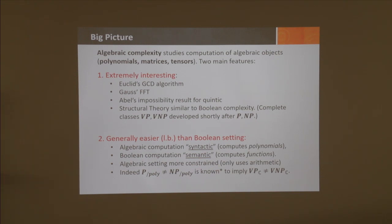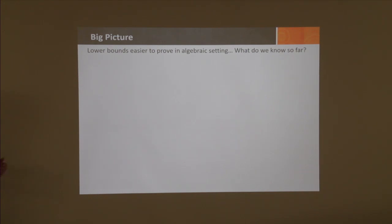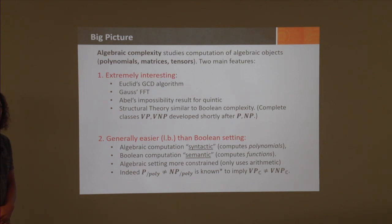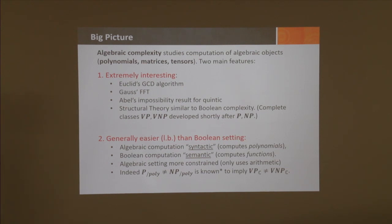As a form of result, we know that separating P/poly from NP/poly is known under the Generalized Riemann Hypothesis to imply that VP is different from VNP. GRH is used here to bound coefficient sizes—it's a consequence that if you have a solution to a system of polynomial equations with integer coefficients over ℂ, then you also have roots in sufficiently large finite fields.